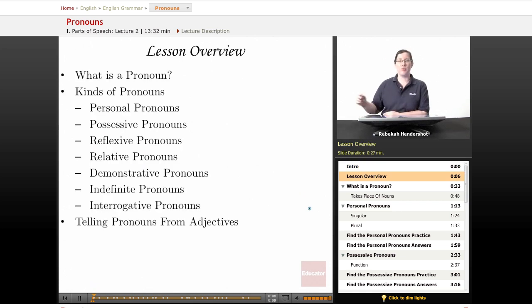All right, we're going to begin with a brief lesson overview. We're going to ask, what is a pronoun? What is it? How does it work? And we're going to look at the many different kinds of pronouns: personal pronouns, possessive pronouns, reflexive pronouns, relative pronouns, demonstrative pronouns, indefinite pronouns, and interrogative pronouns. That's a lot of pronouns. Finally, we're going to focus on how to tell pronouns apart from adjectives, because they do different things, so you have to be aware of which one's which.